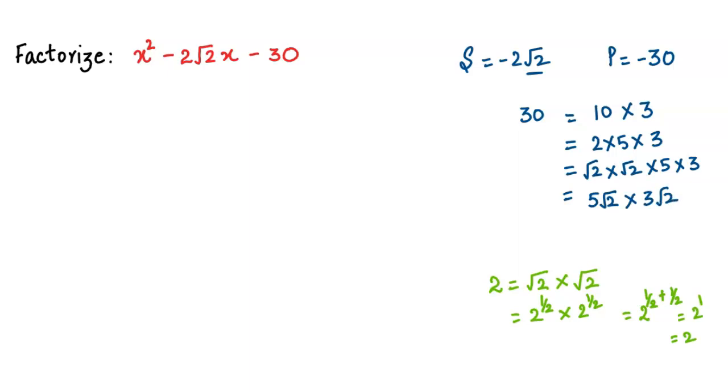When we multiply these, √2 into √2 becomes 2. So the whole multiplication gives us 30. Now what do we want? We want -30.